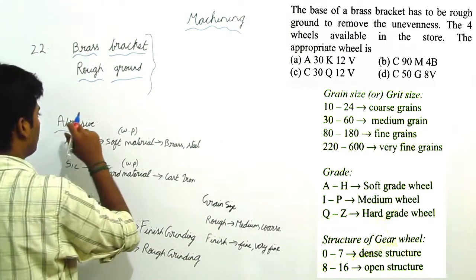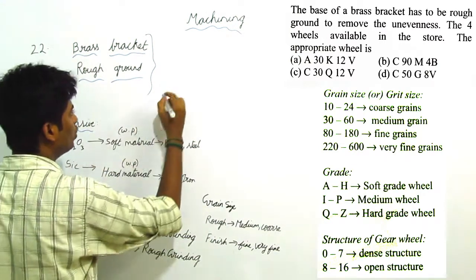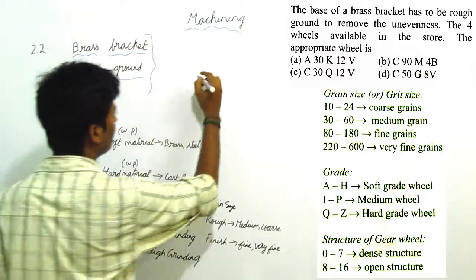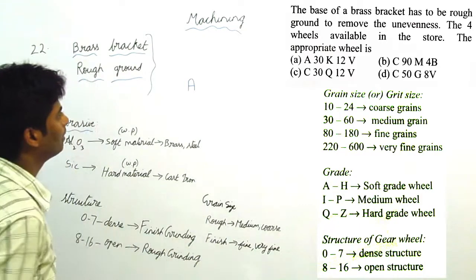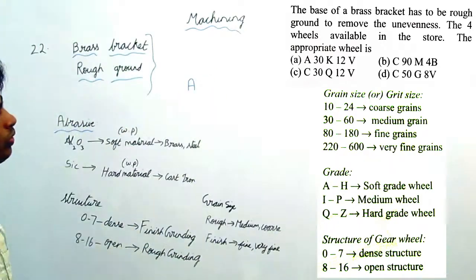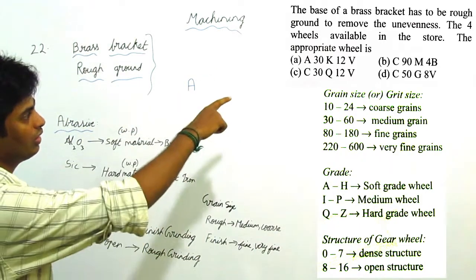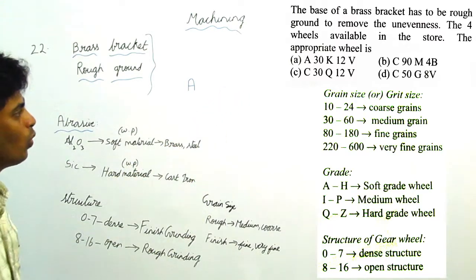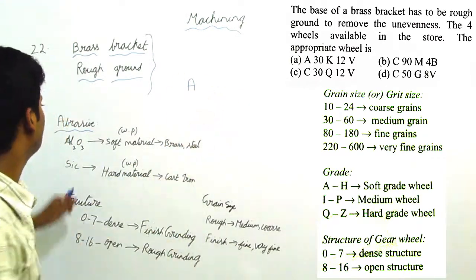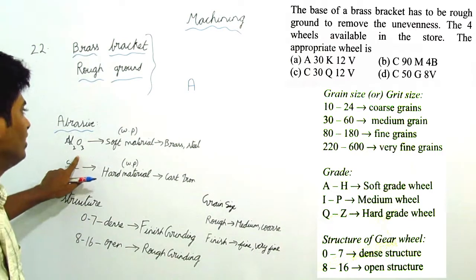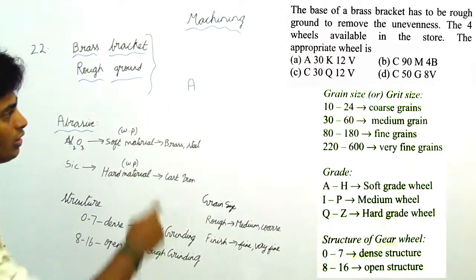For abrasive, we use letter A. In the given options, only option A is correct because only option A uses abrasive material Aluminum Oxide, which is A. The rest of the options are wrong.